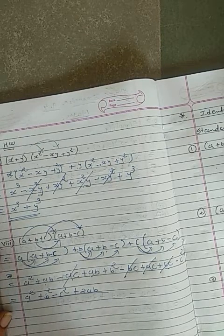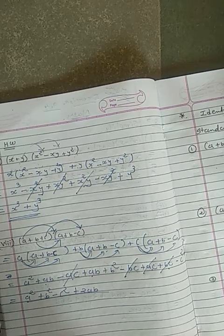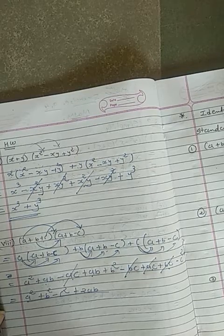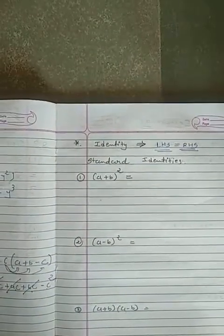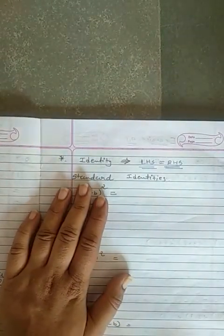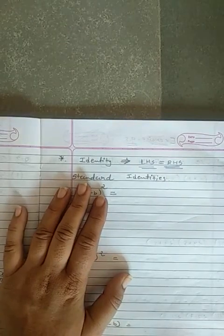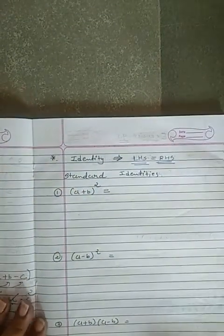Now exercise 9.4 is over. Before going through exercise 9.5, you have to understand a few identities. There are 3 formulas you have to remember.